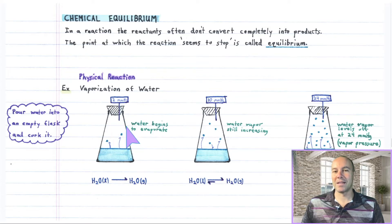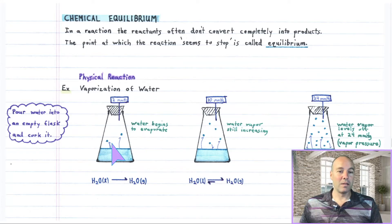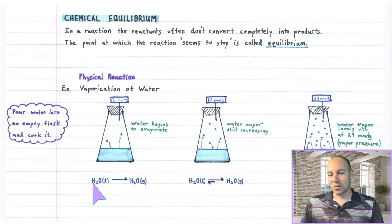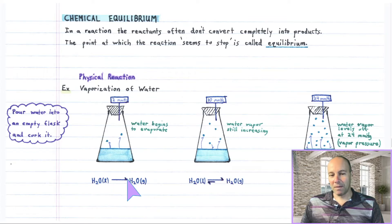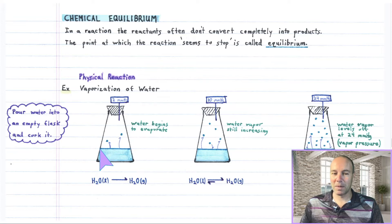We'll monitor the pressure inside the flask using a pressure gauge, reading millimeters of mercury, which tells us how much gas is in there. As soon as you put the water in, some of the water molecules begin to vaporize into the vapor phase. These gas particles, just a little bit at the beginning, are being detected with the pressure gauge, reading two millimeters of mercury. The chemical equation describing this is written right here.